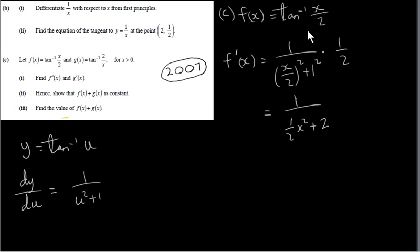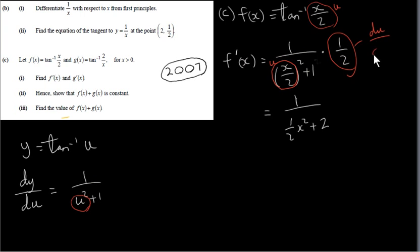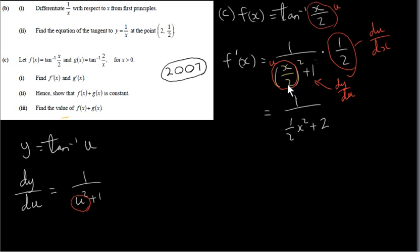We apply the chain rule. Setting u equal to x over 2, we have 1 over u squared plus 1, and by the chain rule we multiply by du dx. Differentiating x over 2 with respect to x gives 1/2, so du dx equals 1/2. This gives dy du times du dx equals dy dx, which is f prime of x. Squaring x over 2 gives x squared over 4; so the denominator becomes x squared over 4 plus 1, which simplifies to x squared plus 4 over 4. Multiplying by 1/2 on top gives f prime of x equals 2 over x squared plus 4.